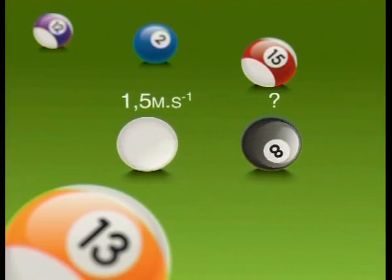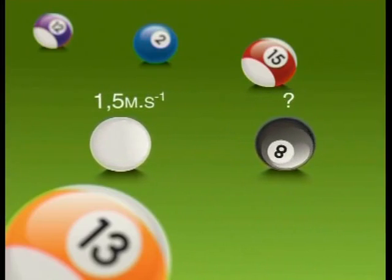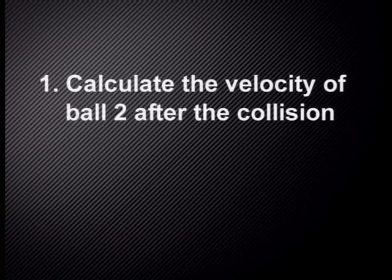After the collision, ball one travels at 1.5 meters per second to the left. With this information, you should be able to calculate the velocity of ball two after the collision.